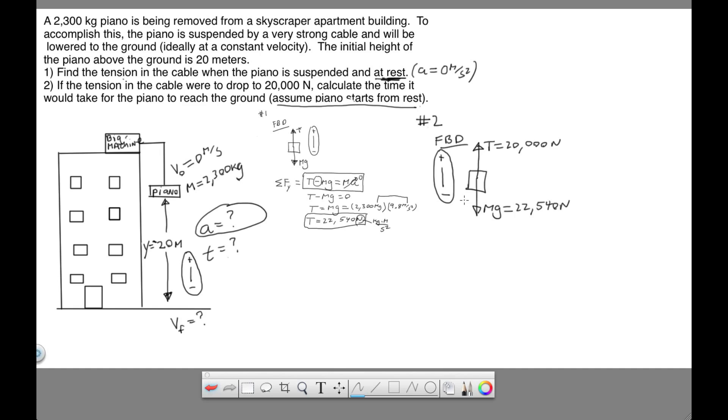The next thing we do is we sum the forces, just like we did in number one. Summing the forces, we have T, which we know, minus mg. And the sum of the forces will always equal ma.